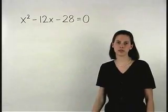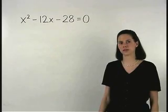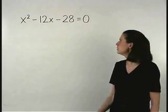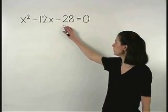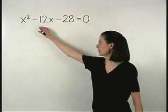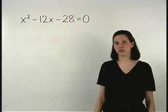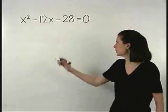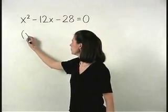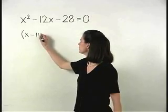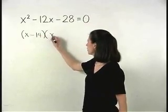To factor x squared minus 12x minus 28, we need the factors of negative 28 that add to negative 12, which are negative 14 and positive 2. So we have x minus 14 times x plus 2.